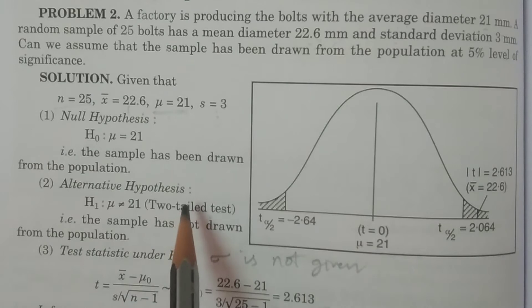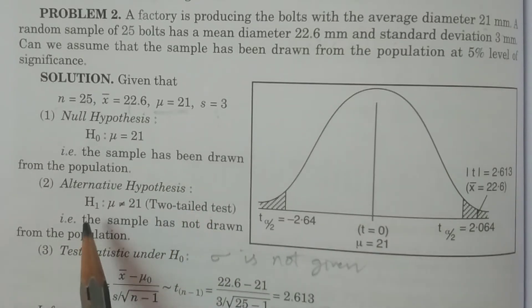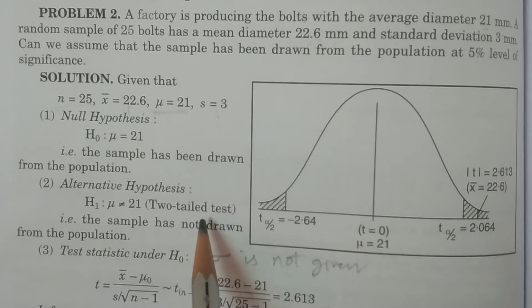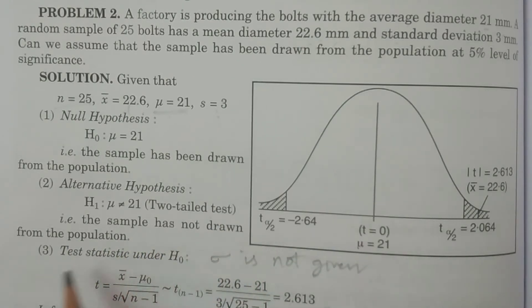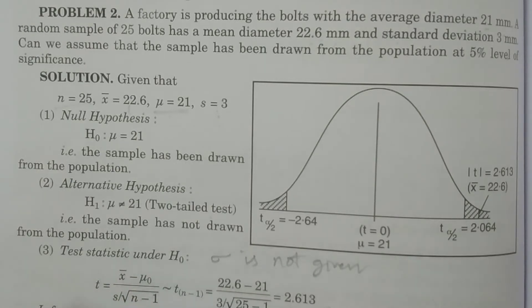Alternative hypothesis. Second point, H1, mu is not equal to 21, that is two-tailed test. The sample has not drawn from the population, that is our statement in H1.